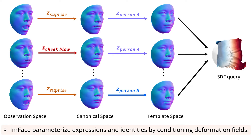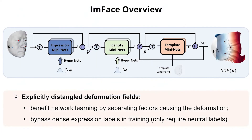By conditioning on two deformation fields, MFACE can synthesize various expressions and identities. We train MFACE with an auto-decoder framework, where latent embeddings and network parameters are optimized together. Our disentangled design not only benefits network learning, but also allows us to train the 3D morphable model only with neutral expressions.